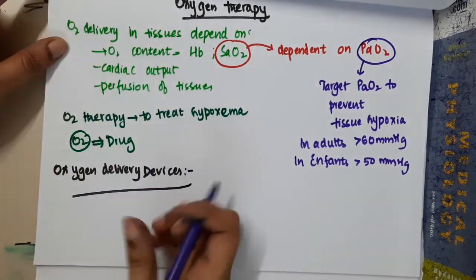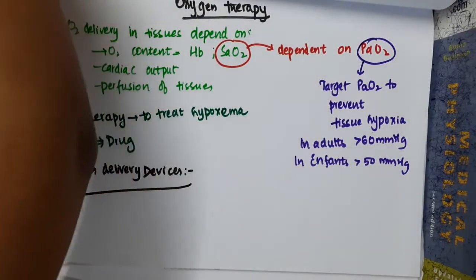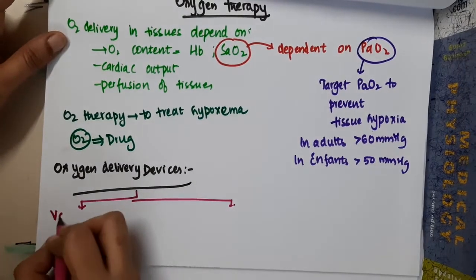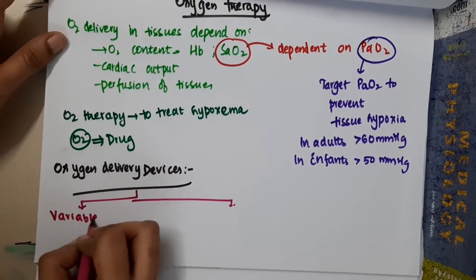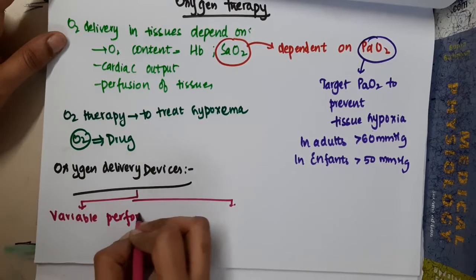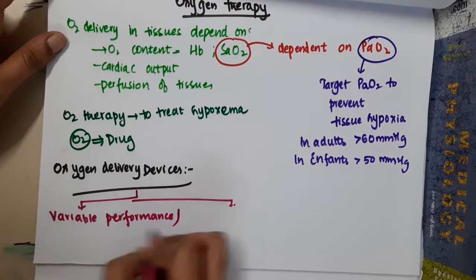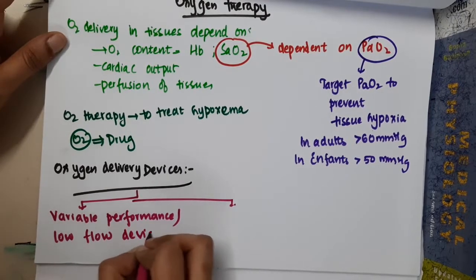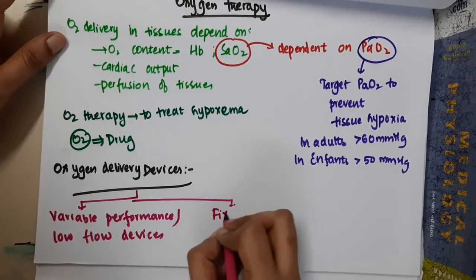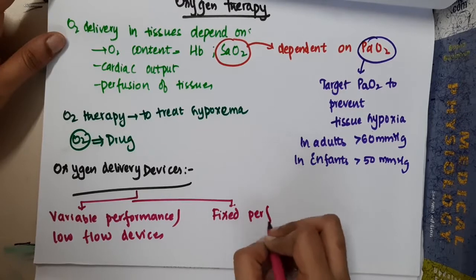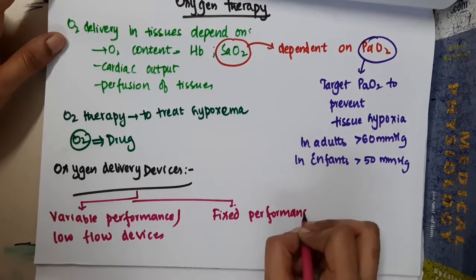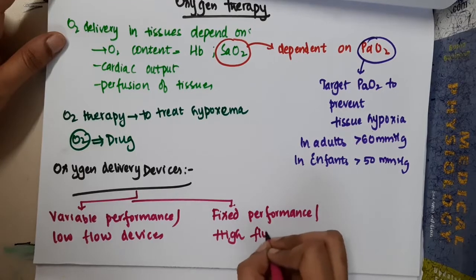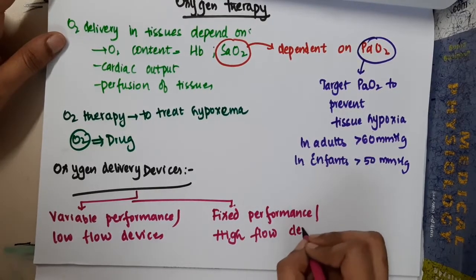Oxygen delivery devices can be divided into two types. First, we have variable performance devices, also called low flow devices. Second, we have fixed performance devices, also called high flow devices.